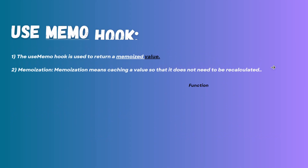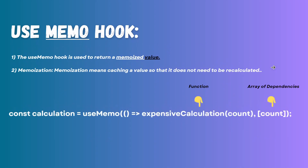Now let's look at the useMemo hook. useMemo is used to return a memoized value — memoization means caching a value so it does not need to be recalculated. It improves performance by memoizing the result of a function call and returning the cached result when the dependencies have not changed. useMemo takes two arguments: a function and an array of dependencies.